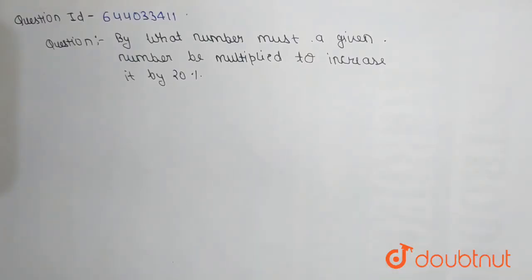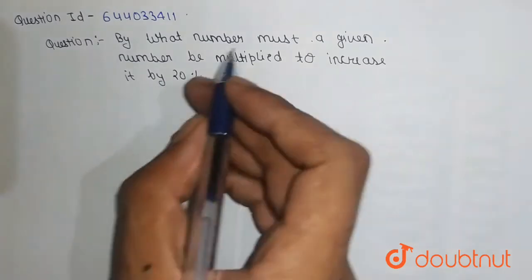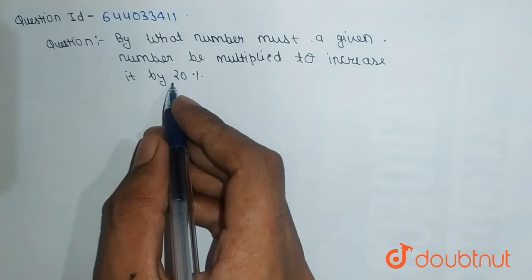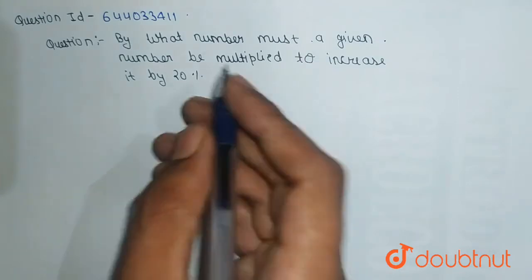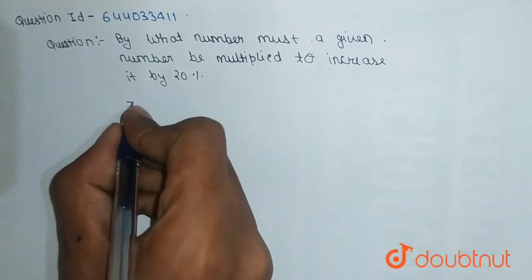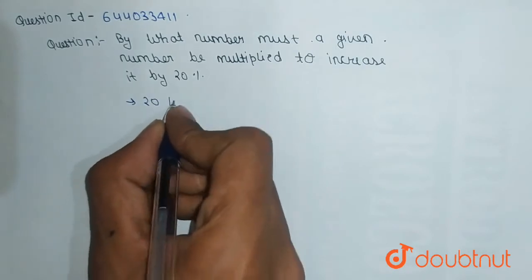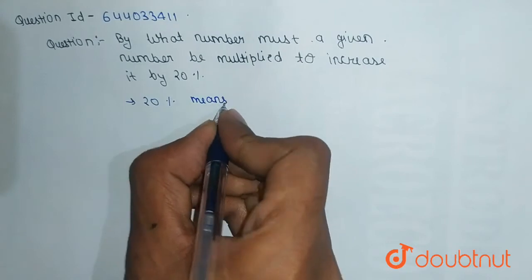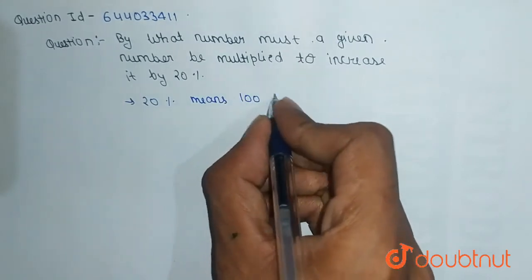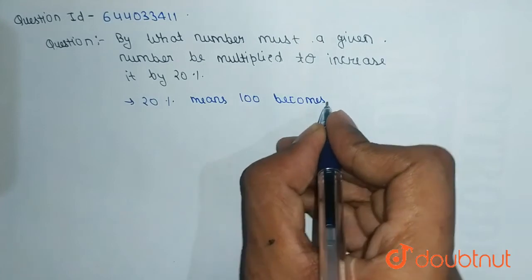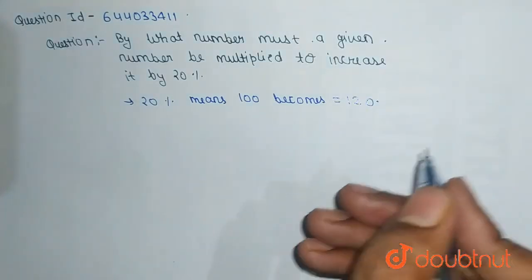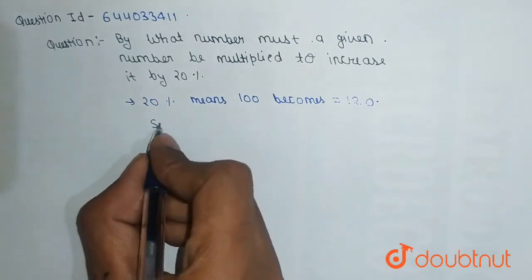is based on percentage. By what number must a given number be multiplied to increase it by 20%? So let's start. 20% means 100 becomes 120. So for the question,